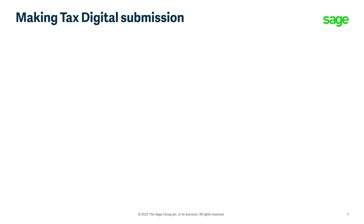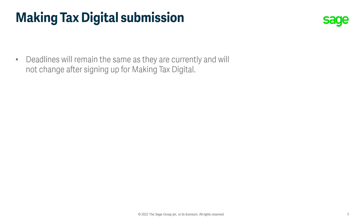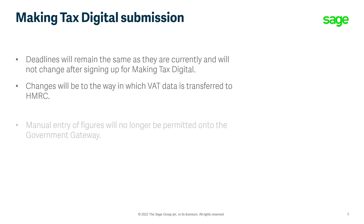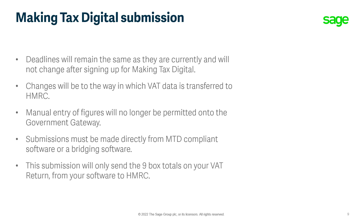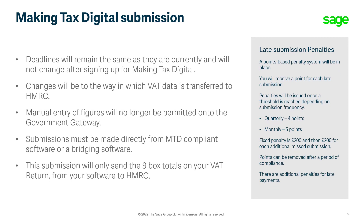Regarding the Making Tax Digital submission, there will be no change to the frequency of submission or the deadlines in place after registering. The only change is that you can no longer log on to the HMRC gateway to manually enter the figures — you must submit direct from your software. The Making Tax Digital submission will transfer the nine box total figures from your VAT return in your software to HMRC on your behalf. It is important to understand that there will be penalties for non-compliance on a points based system. One point will be received for each late submission, and once you meet a threshold — four points for quarterly submissions and five points for monthly submissions — a penalty will be charged. These points can be removed after a period of compliance, and there will also be penalties for late payments to HMRC.